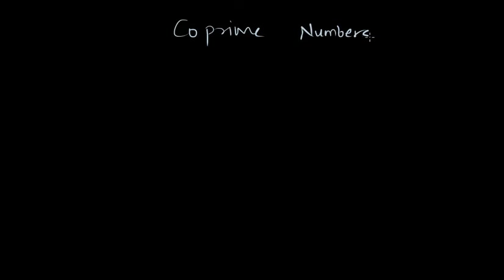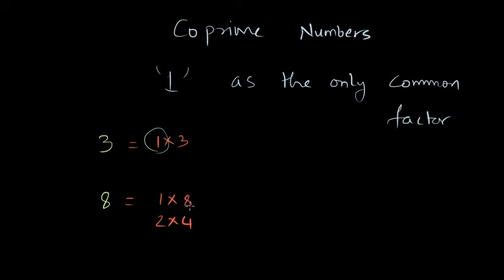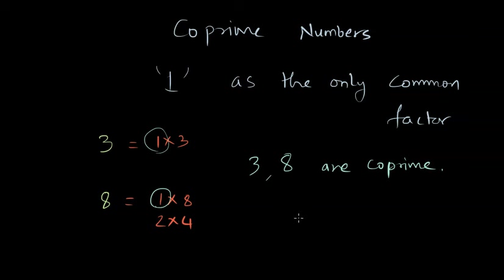Now let me introduce one more interesting concept: co-prime numbers. Co-prime numbers are numbers which have 1 as their only common factor. For example, take 3 and 8. The only way to write 3 as a product is 1 times 3. For 8, we have 1 times 8 or 2 times 4. The only factor common to both 3 and 8 is 1 — there is no other common factor. So 3 and 8 are co-prime numbers. I encourage you to find more co-prime numbers, since there are many.